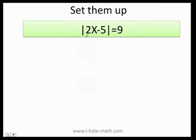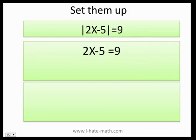Let's say I have absolute value of 2x minus 5 equals 9. First you need to do a good twin and what I call a bad twin. You need to set them up by doing 2x minus 5, which is whatever is inside the absolute value, equals to 9, and then 2x minus 5 equals to negative 9. This is the good twin and this is the bad twin.